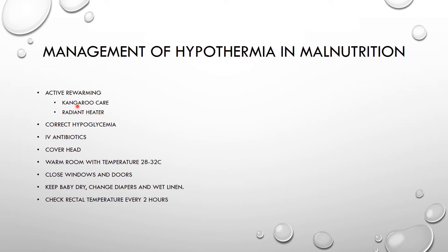Apart from active re-warming, we talk of correcting hypoglycemia. As we said, hypoglycemia and hypothermia are in the same group, so we need to correct that as soon as possible if we are to be able to raise the temperature. We also need to treat infections, as we know this can contribute to hypothermia, so antibiotics will be given as soon as possible.